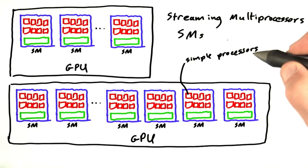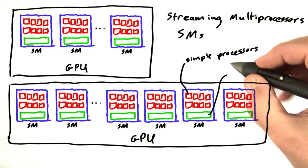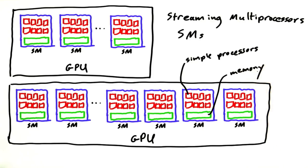And an SM, in turn, has many simple processors that can run a bunch of parallel threads. It also has some other things like some memory that we'll talk more about in a moment.